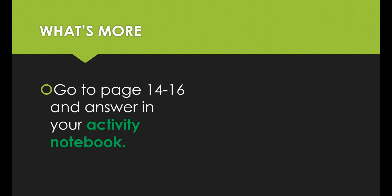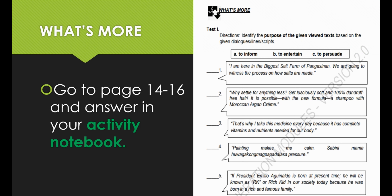So let's apply what you've just learned. Go to page 14, What's More. For test 1, identify the purpose of the given viewed text based on the given dialogues, lines, or scripts. Choose your answer: letter A — to inform, letter B — to entertain, or letter C — to persuade. For example, in number 1: 'I'm here in the biggest salt farm of Pangasinan. We are going to witness the process on how salts are made.' The purpose is to inform, so the answer is letter A.